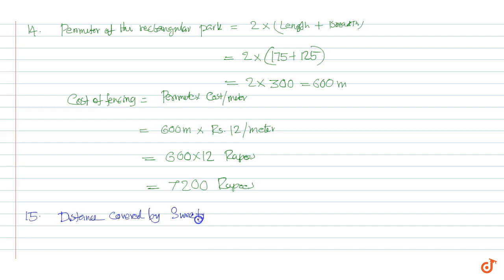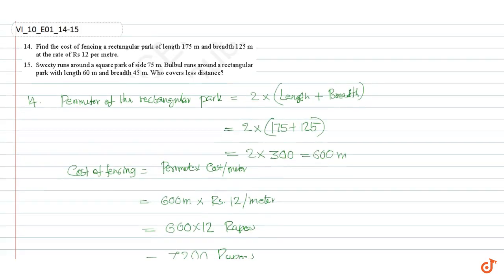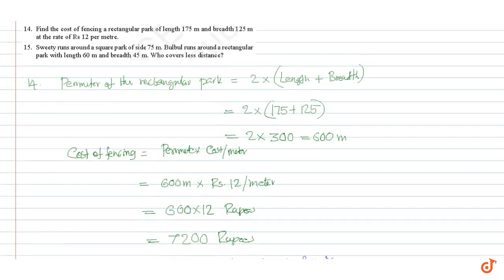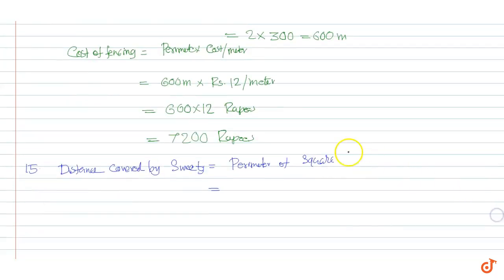Distance covered by City is equal to the perimeter of the square park, which is equal to 4 into side, equal to 4 into 75 meters, which is equal to 300 meters.